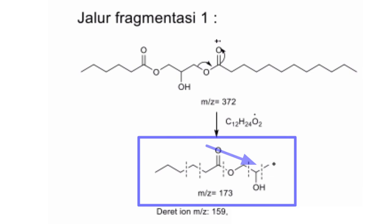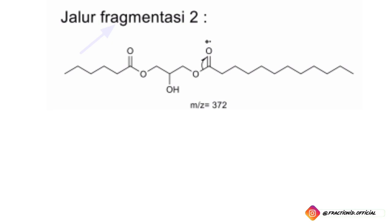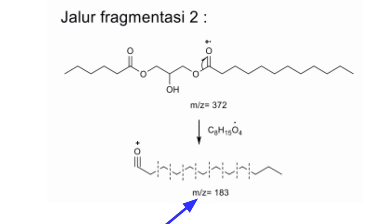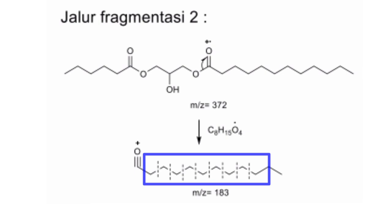Berikut jalur fragmentasi 2-nya, di mana terjadi pembelahan homolisis. Kalau homolisis dekarbonil pasti akan membentuk ion asilium — itu adalah kata kuncinya. C₈H₁₅O₄ menjadi radikal, dan ion asilium ini terbaca di spektrum masa sebesar 183 m/z. Lalu terjadi pembelahan metil atau alkil secara berkelanjutan, mulai dari yang paling kanan ini 141, lalu hingga ke ujung yang sisa 43 m/z.